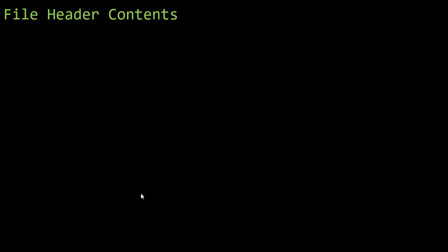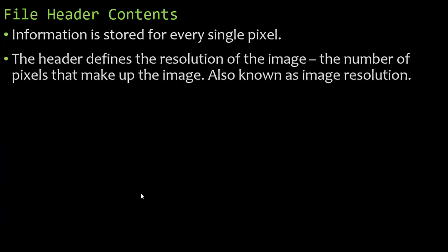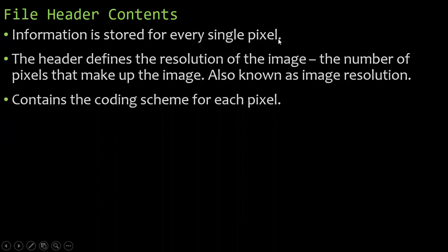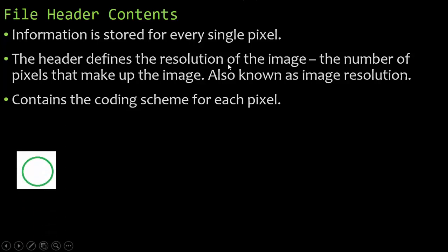Getting more in depth about the file header contents: information is stored for every single pixel. The header defines the resolution of the image — the number of pixels that make up the image, also known as the image resolution. Inside the file header, something that you never see in a picture, is the image resolution. It also has information stored for every single pixel that makes up that image, and it contains the coding scheme for each pixel, which directly relates back to the color of that pixel.